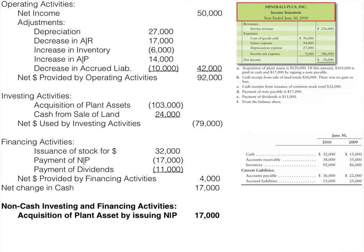There was a decrease in accounts receivable of $17,000. If accounts receivable decreased, we collected the cash, so cash is increasing — that's a positive number. There was an increase in inventory, meaning we bought more inventory, so cash is going down. Inventory can be purchased with cash or on account, but if purchased on account, it will be offset when we analyze accounts payable — so it all equals out.